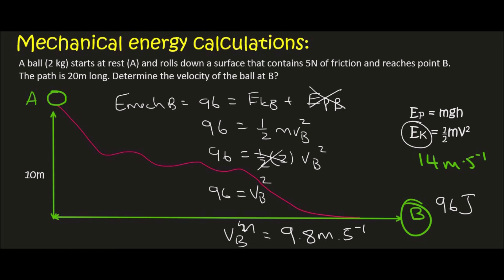So notice in the previous example that we did, it was 14 meters per second. But due to a bit of friction now, that takes away some of the energy from the object. And so at the bottom, at B, it only has a velocity of 9.8 meters per second. Thank you very much for watching.